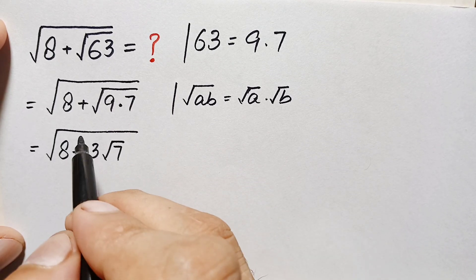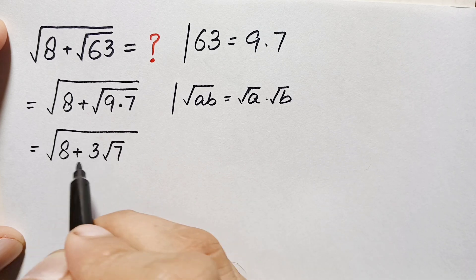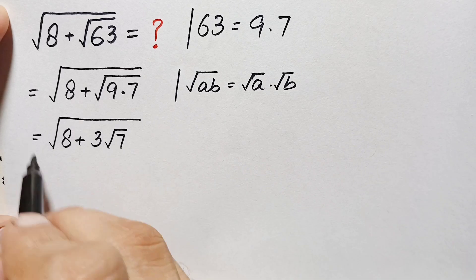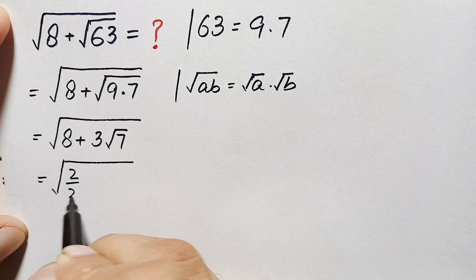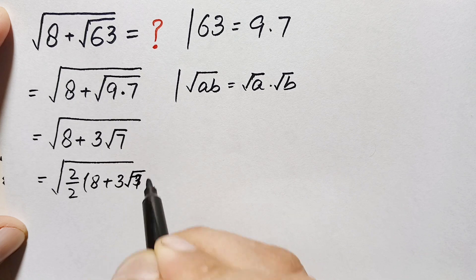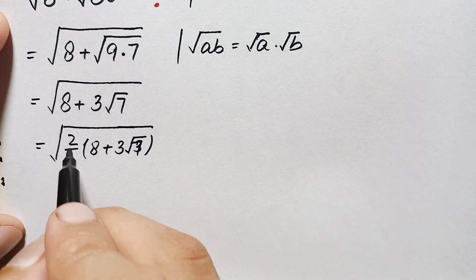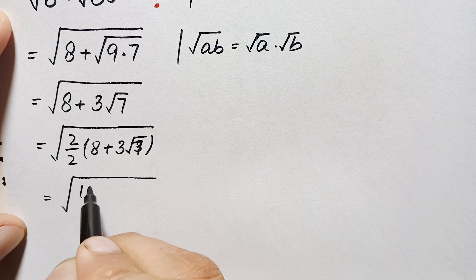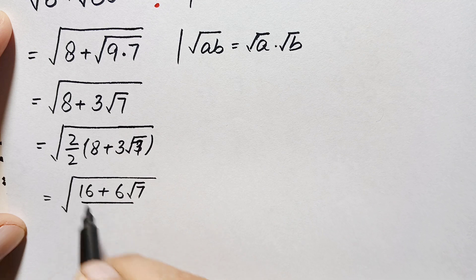Our target is to eliminate the outer square root. To do this, we try to make the expression inside a perfect square. We multiply and divide by 2, so this becomes the whole square root of (8 plus 3√7) times 2 over 2, which gives us the whole square root of (16 plus 6√7) divided by 2.